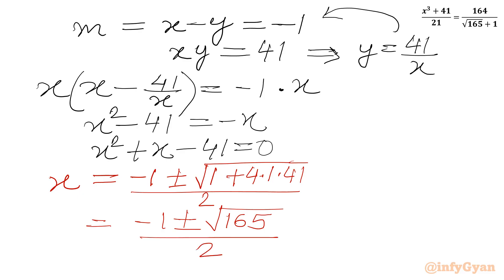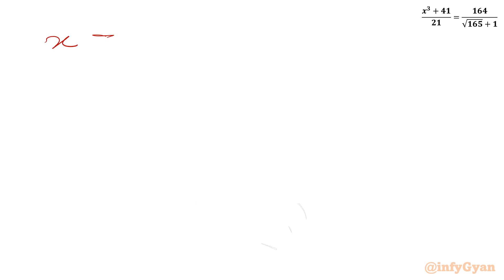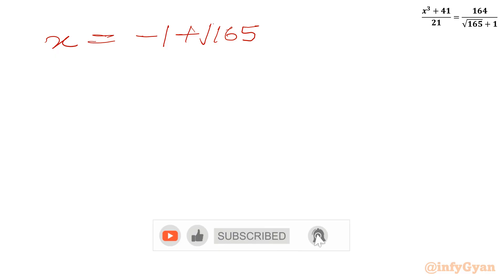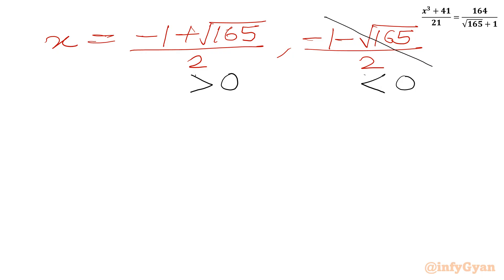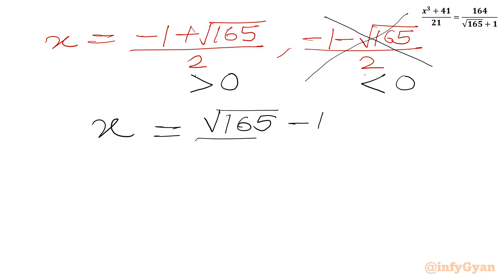The two values of x are (−1 + √165)/2 and (−1 − √165)/2. Since the condition on x is that it must be positive, the second value is negative and we reject it. So the accepted answer is x = (√165 − 1)/2.